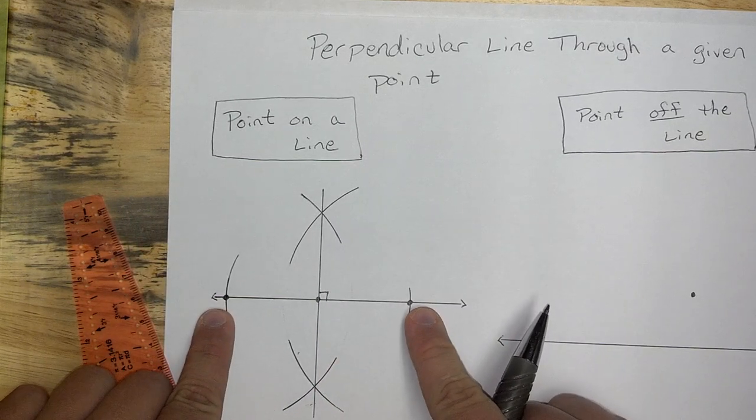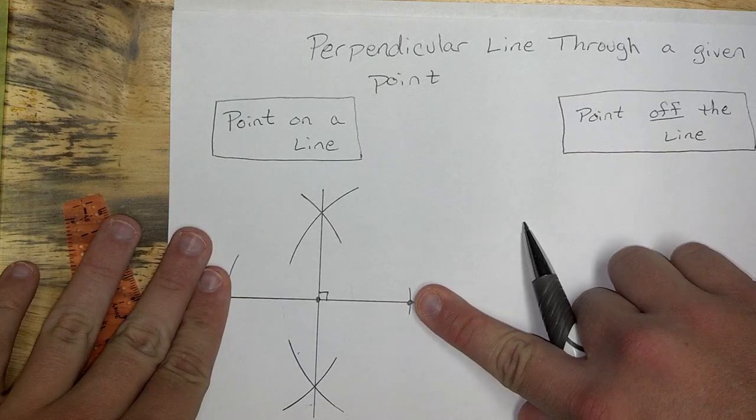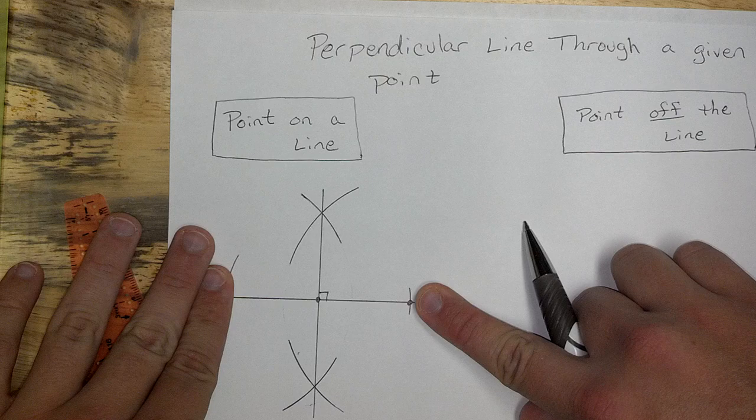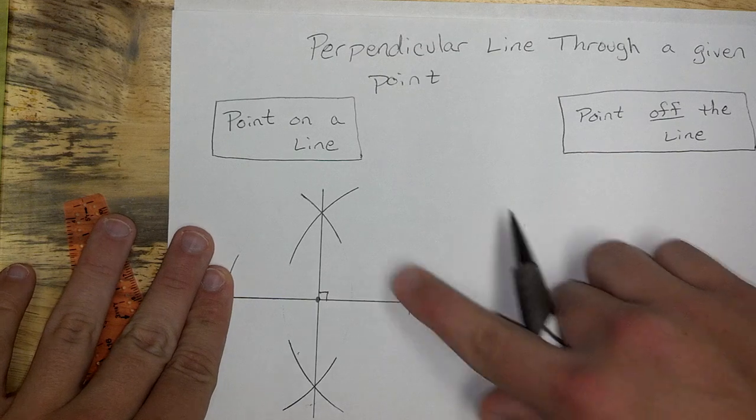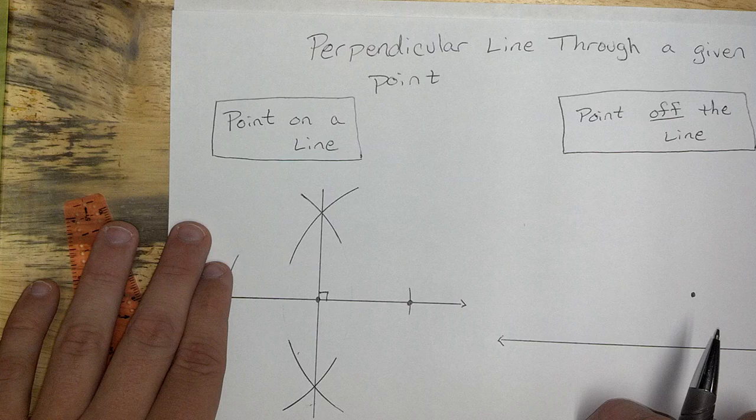By creating the two endpoints and creating this segment here, we were able to bisect it, using our common bisected segment construction. And if you guys remember, that also makes a perpendicular line.